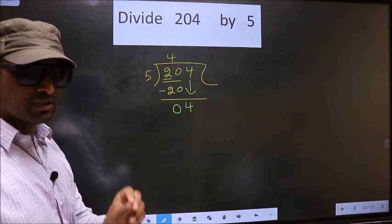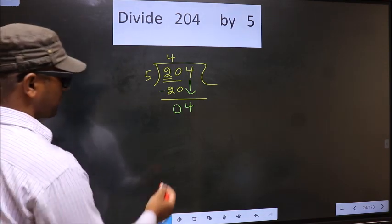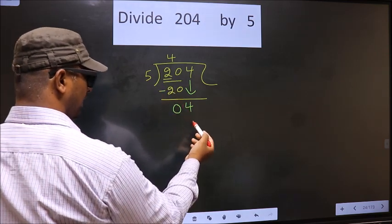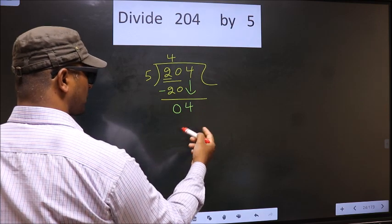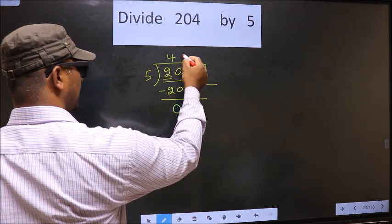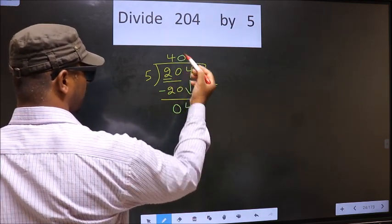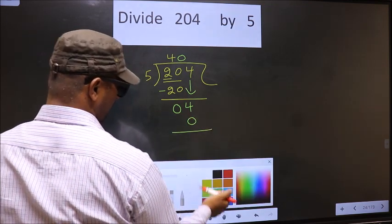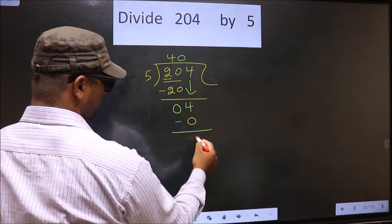Instead, what you should think of is, what number should we write here? If we write 5, that is larger than 4. So, what we do is, we take 0 here. So, 5 into 0, 0. Now, you subtract 4 minus 0, 4.